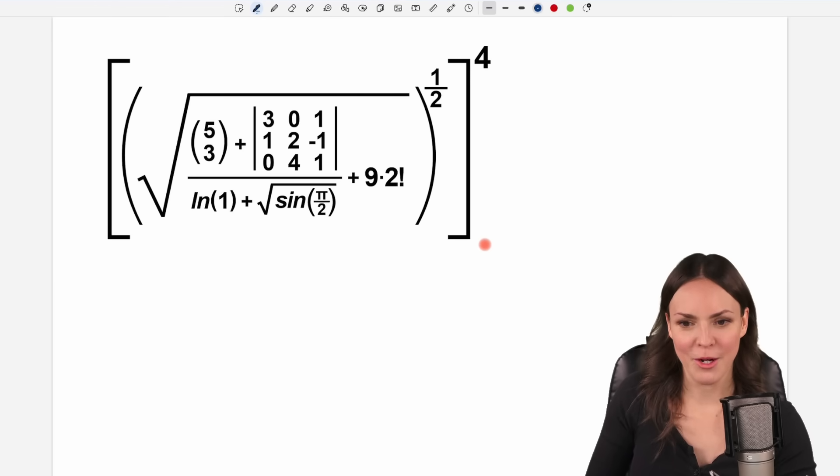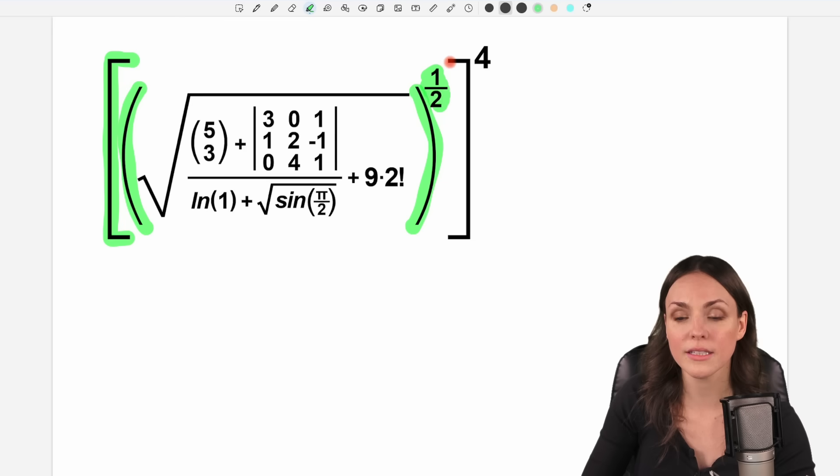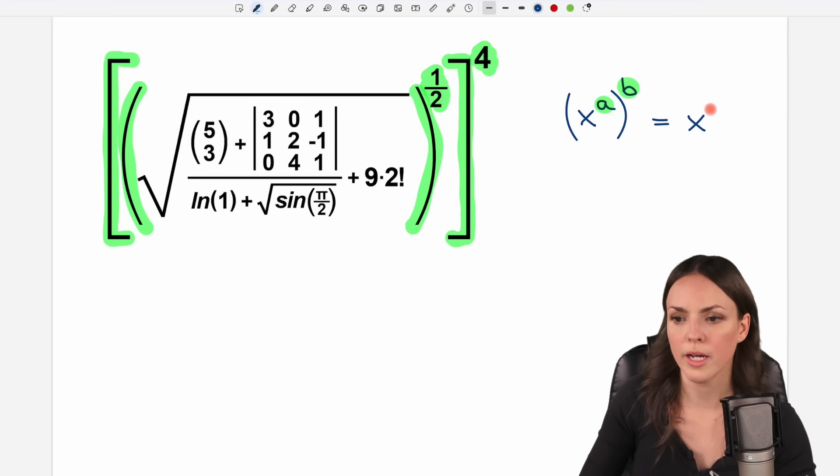Okay, there is a lot of stuff going on. We have all of this here in this square root, then we have these parentheses, all of this raised to the power of 1 over 2, and then all of this raised to the power of 4. So maybe we start with the exponents. There is a rule, if you have something raised to the power of a, and then you take all of this again and raise it to the power of b, then you are allowed to just multiply the exponents.